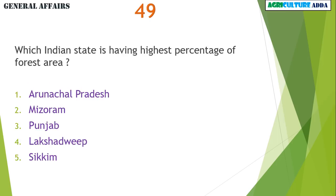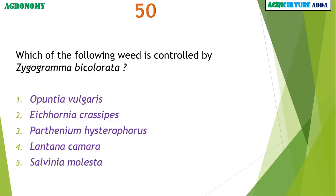Which Indian state has the highest percentage of forest area? Mizoram. Which of the following weed is controlled by Zygograma bicolorata? Parthenium hysterophorus.